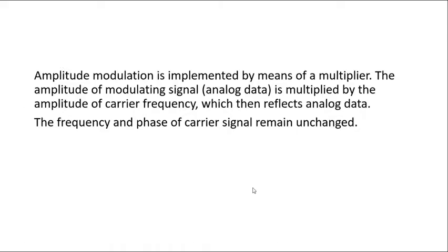Amplitude modulation is implemented by means of a multiplier. The amplitude of the modulating signal is multiplied by the amplitude of the carrier frequency.